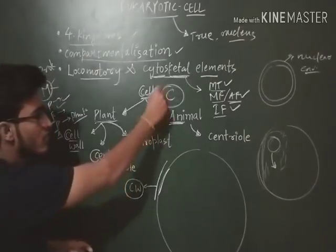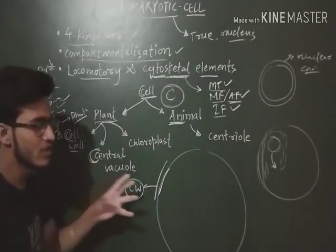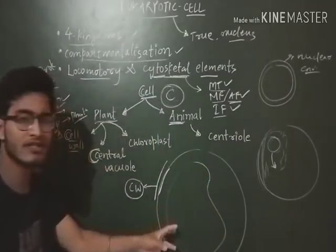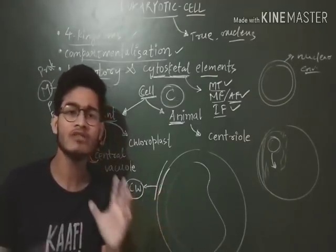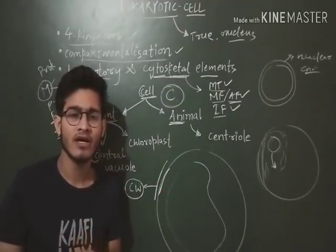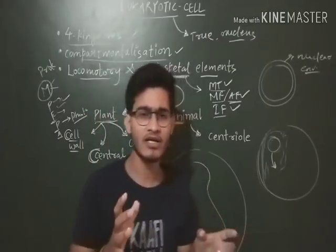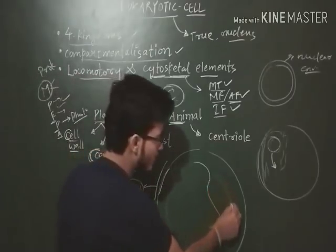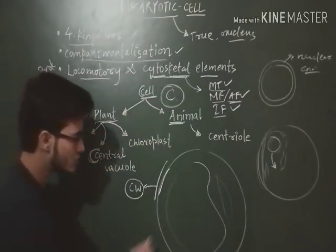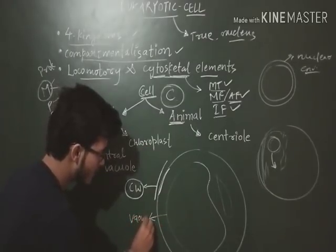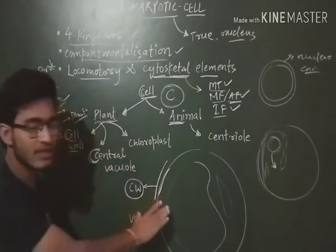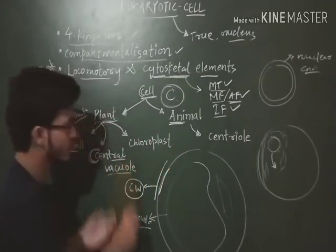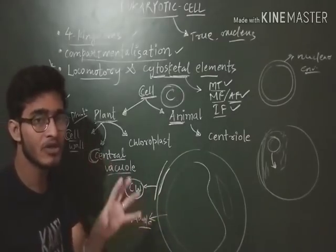Next, C for central vacuole. Central vacuole means there is a large vacuole in the plant cell — it is central because it occupies most of the space of the plant cell. If something occupies more space, it comes to a central position and shifts the other organelles to the corners. A large central vacuole is present in plant cells, whereas such a large vacuole is not present in animal cells. So central vacuole is also an important character of plant cells.